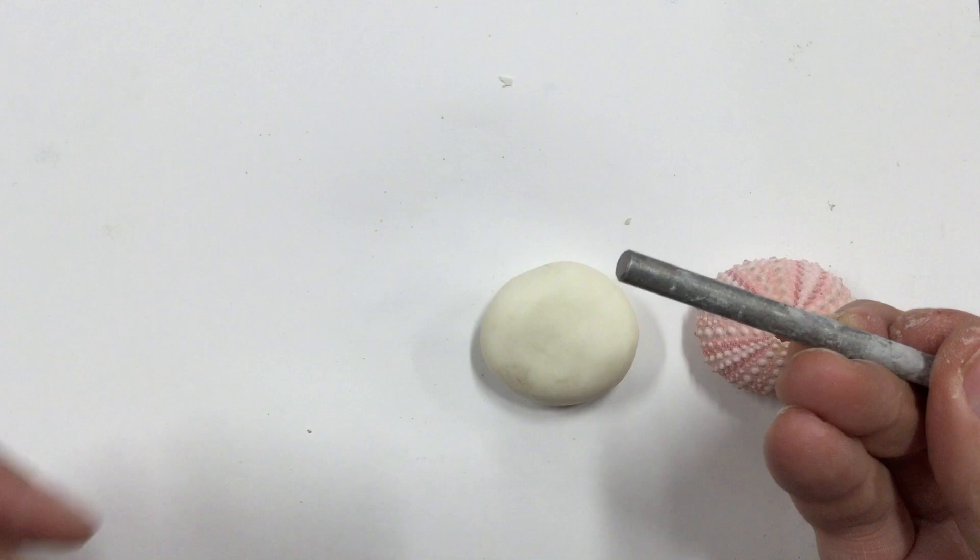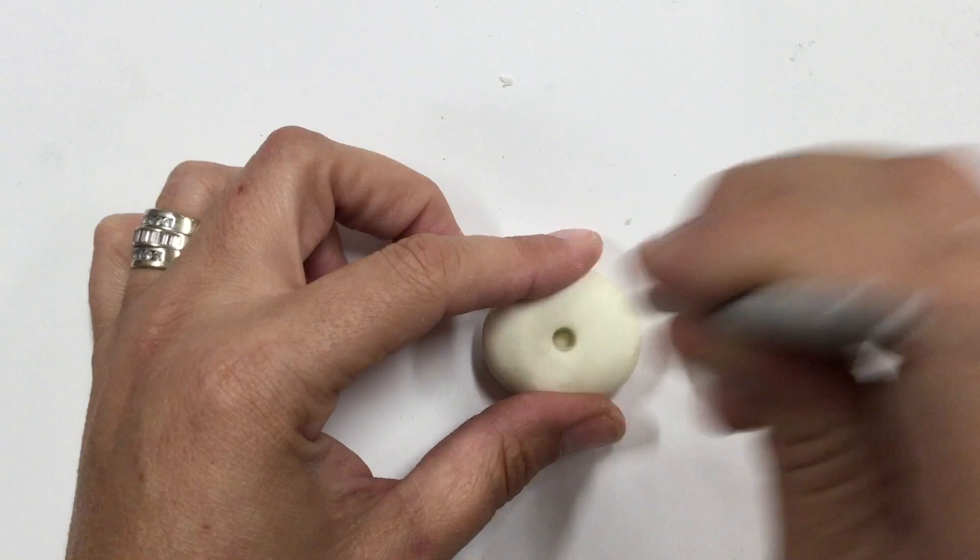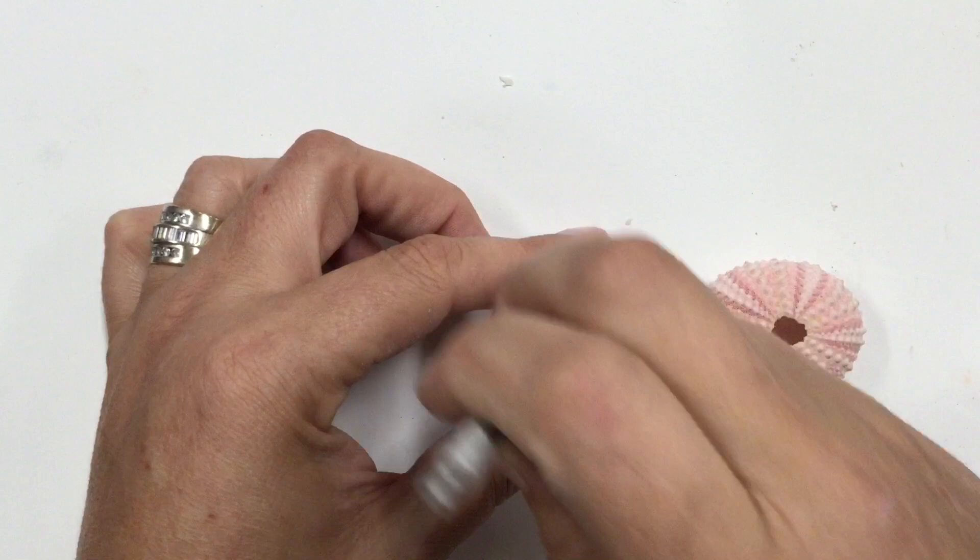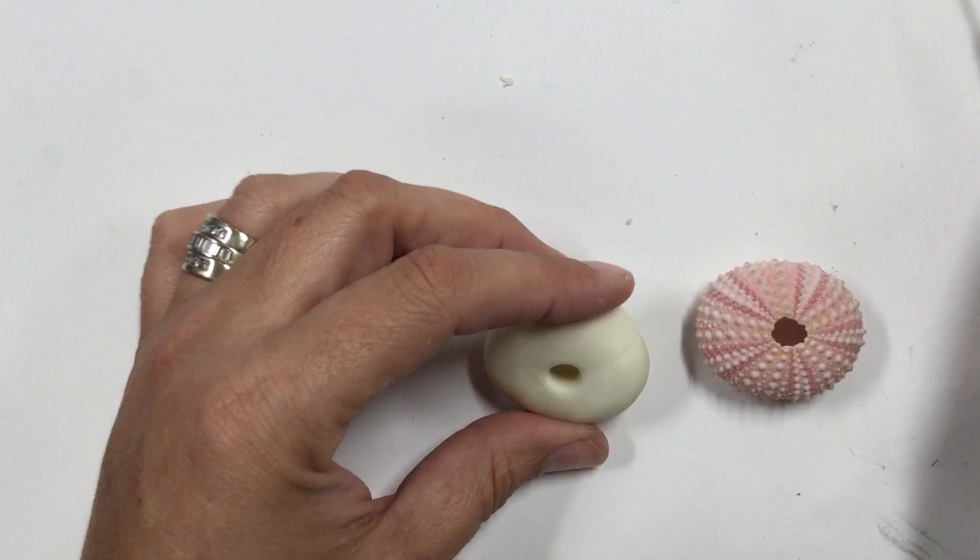And you're going to begin by taking the back of a colored pencil. I'm using a needle tool here, but some people got a little nervous about you guys using needle tools. So you're just going to use the back of a colored pencil. And you're going to push down. Don't push down all the way down to the table. But you want to push in a little bit deep so that there's a little bit of a shadow.